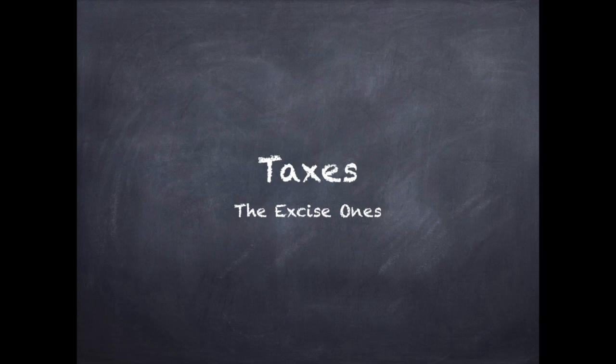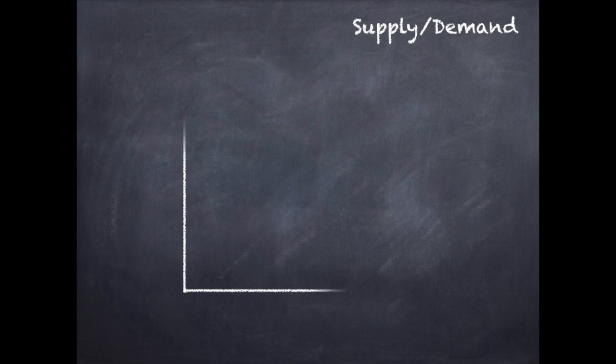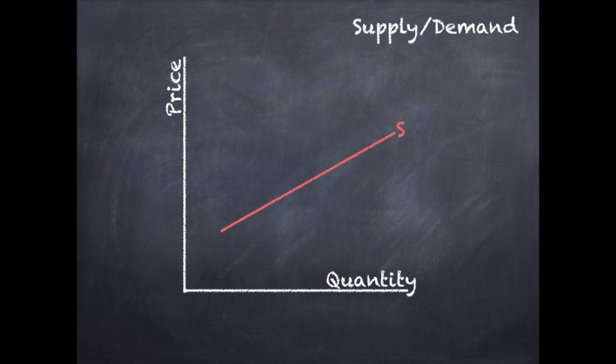With our look into taxes, we are going to start with the very basic supply and demand graph. You'll have your axis with price on one side and quantity on the other. You'll have your supply curve and demand curve, and the combination of those two curves will create your equilibrium point.